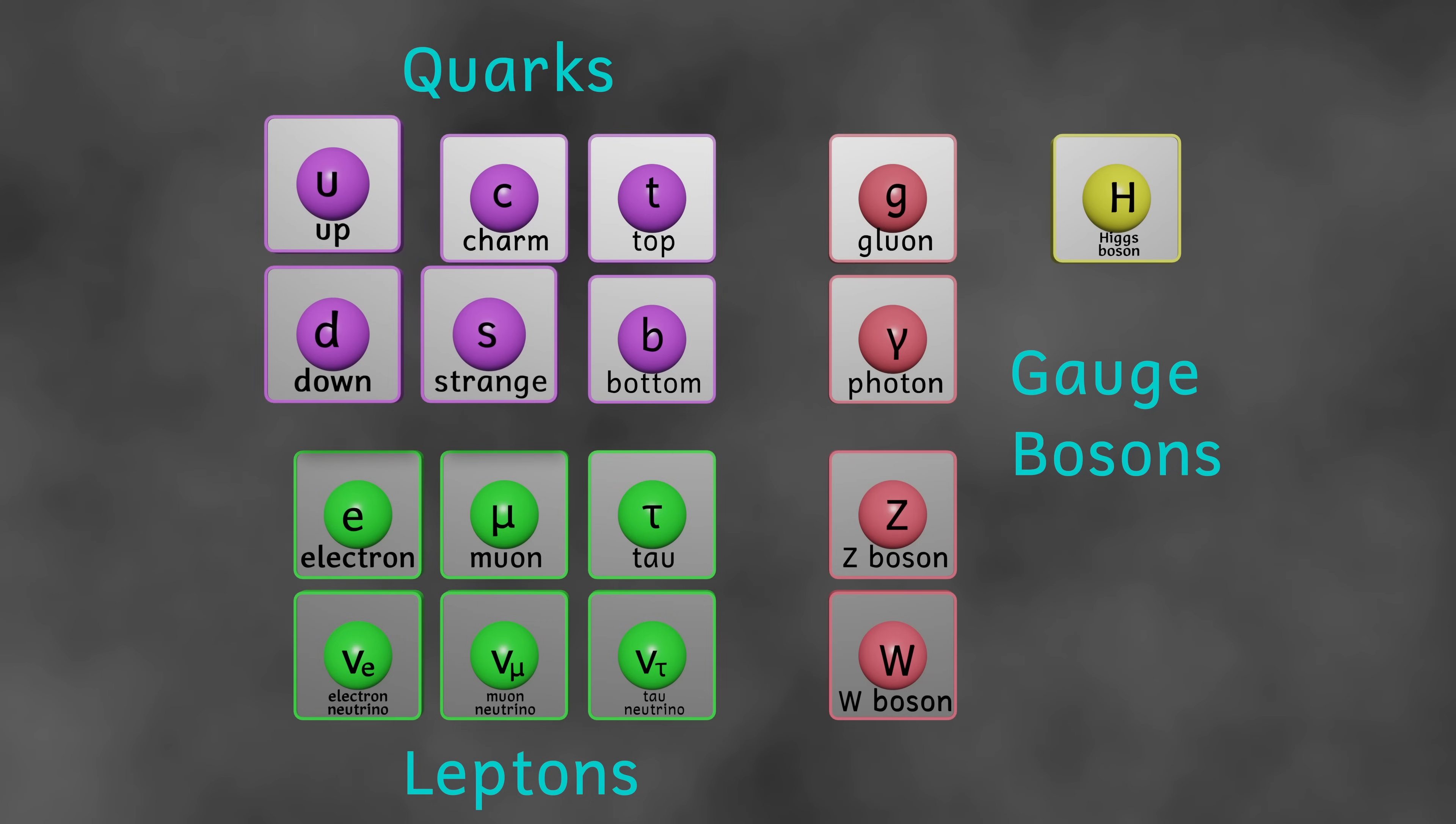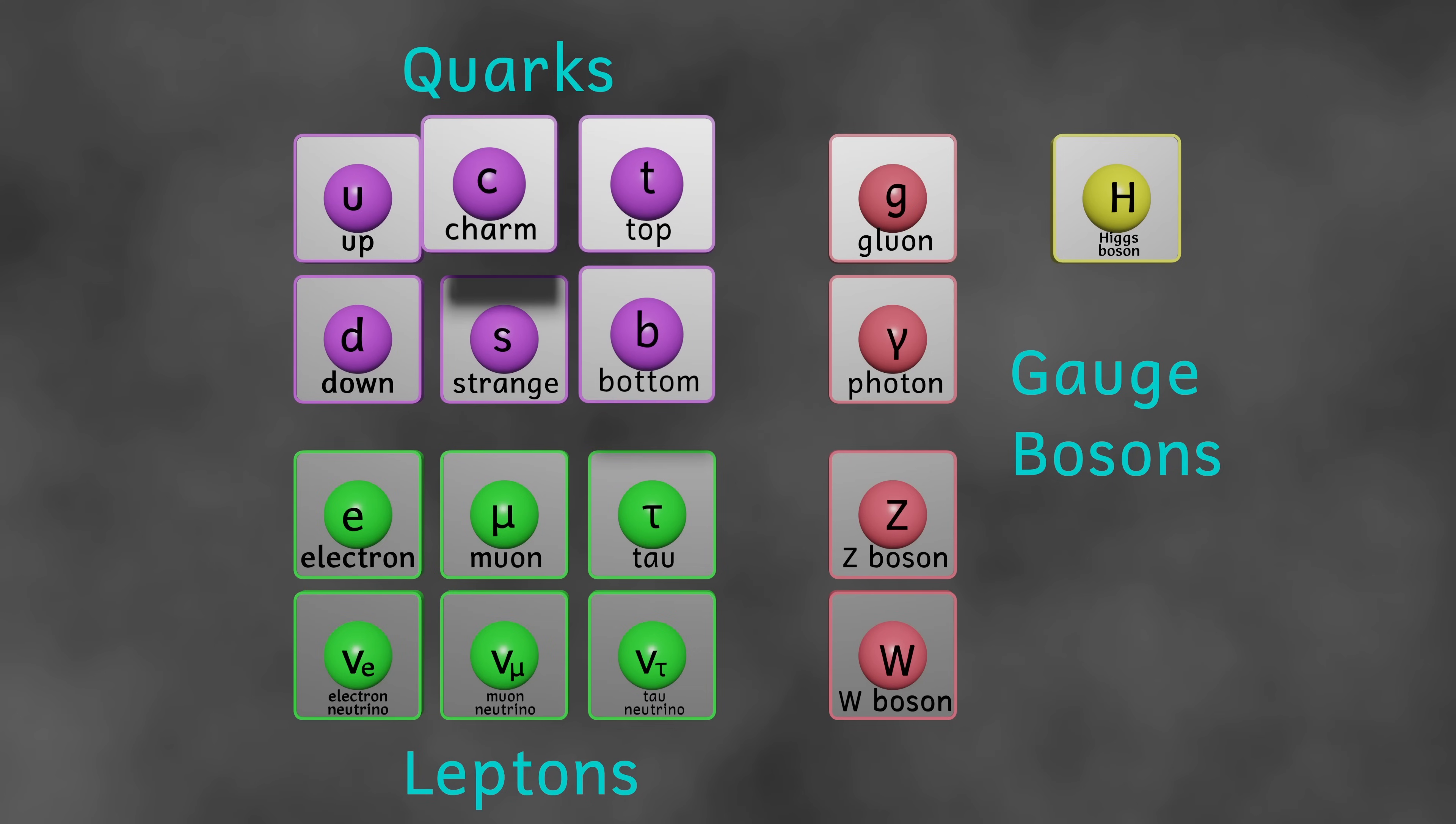Up, down and strange are grouped together as they are lighter, and the top, bottom and charm are grouped together as they're heavier.